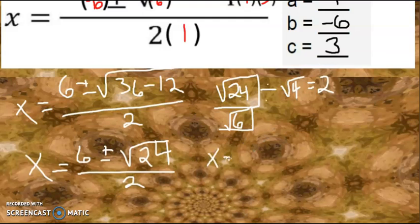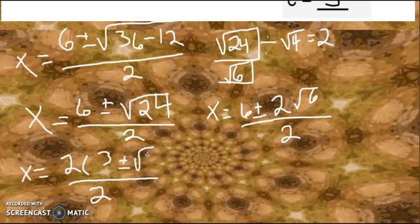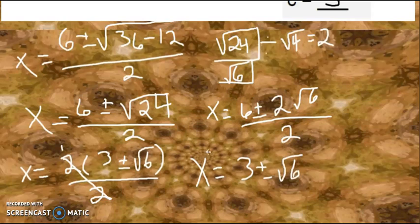Let's rewrite that: x equals 6 plus or minus 2 square root of 6 all over 2. At the top, the greatest common factor of 6 and 2 is 2, so we can factor out a 2. 6 divided by 2 is 3. 2 square root of 6 divided by 2 is the square root of 6 all over 2. 2 divided by 2 is 1, so those go away. Your solutions are x equals 3 plus or minus the square root of 6. That's it.